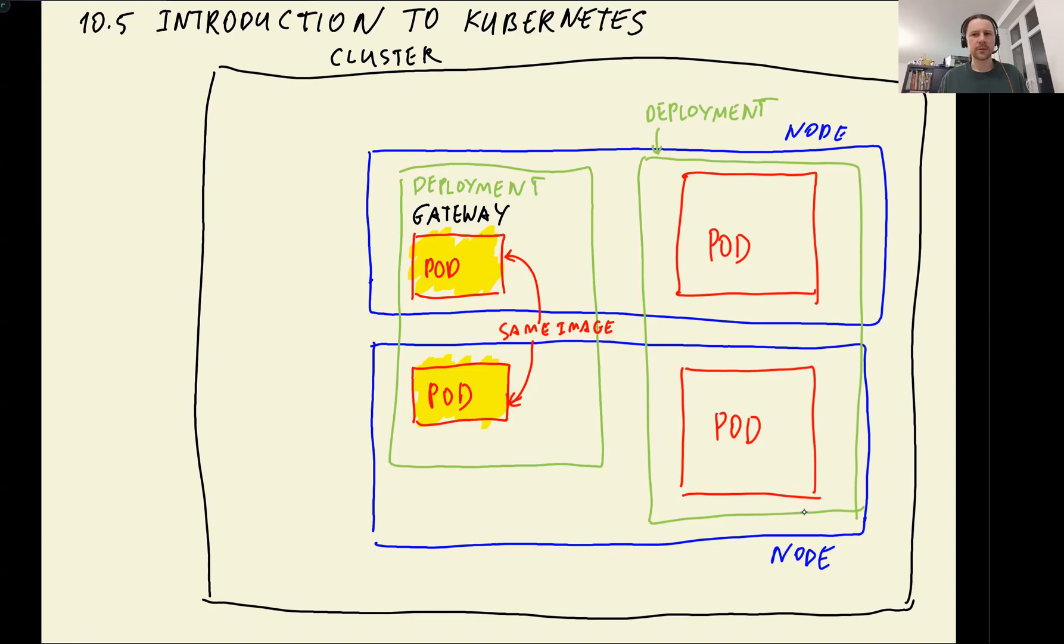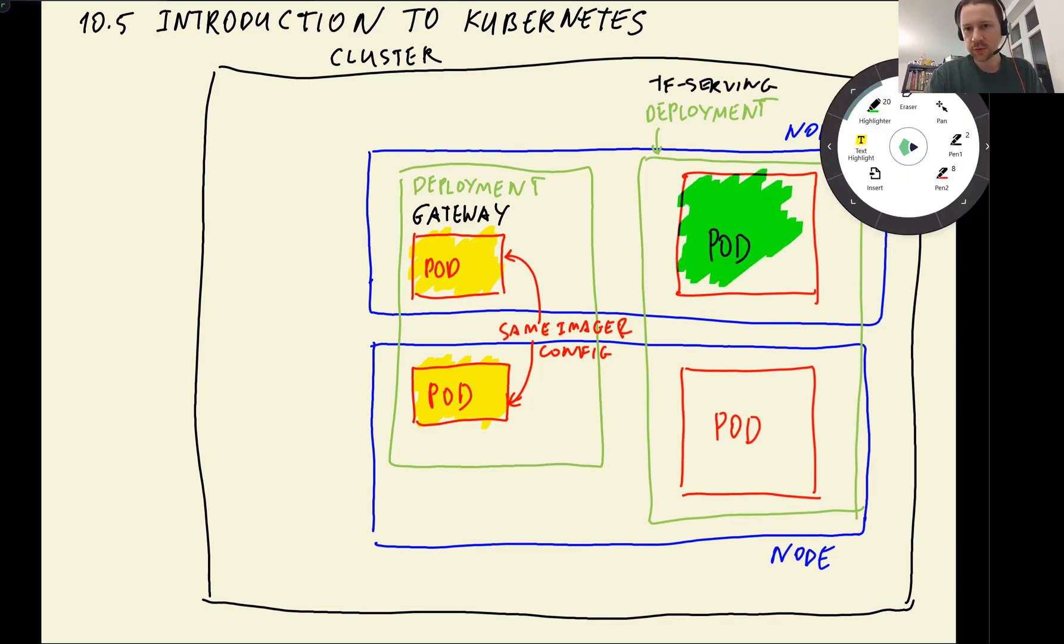All these pods for gateway deployment, they all have the same image. In our case, I think it was like zoom camp 10 gateway 002. They all have the same image, the same tag of the image, and they have the same parameters, like the same configuration. And by configuration here, I mean the environment variables and things like that. And the other deployment could be our TensorFlow serving model. This is deployment for our model. It needs more resources to score images. That's why the pods here, they are larger. So they need more resources.